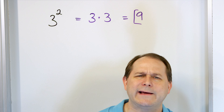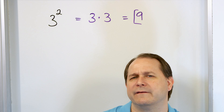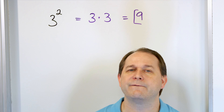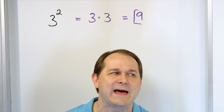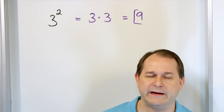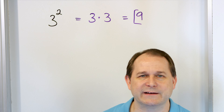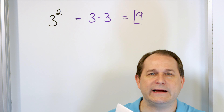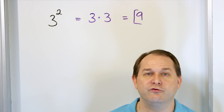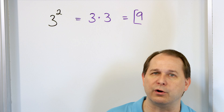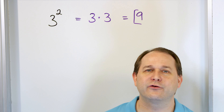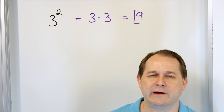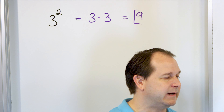Now you might say, why do I care about that? You're just going to have to trust me a little bit that when we get a little farther in math, exponents pop up all over the place in our equations. One simple example: when you calculate how much gravity is between two objects like the Earth and the Moon, there's going to be a square — an exponent of 2 — in that calculation. It pops up in nature all the time.